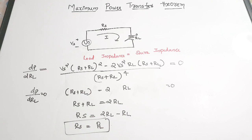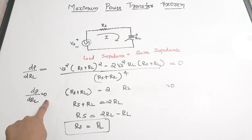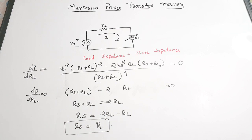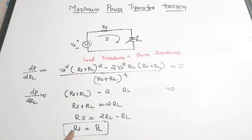To find the value of an unknown resistance, we write an equation for power, differentiate it with respect to RL, and equate to zero — that is, dP/dRL = 0. This gives us the condition that load impedance equals source impedance. Next, we will do some numerical questions: finding the maximum power and the value of load impedance or load resistance.